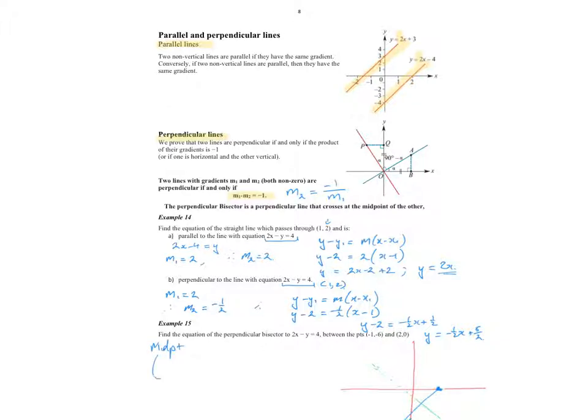So the midpoint, x1 plus x2 on 2, y1 plus y2 on 2, would give me 2 plus negative 1 on 2 and 0 plus negative 6 on 2. That's going to give me a half, negative 3. So that's the midpoint. I now have the point that the line goes through and the gradient of that line.